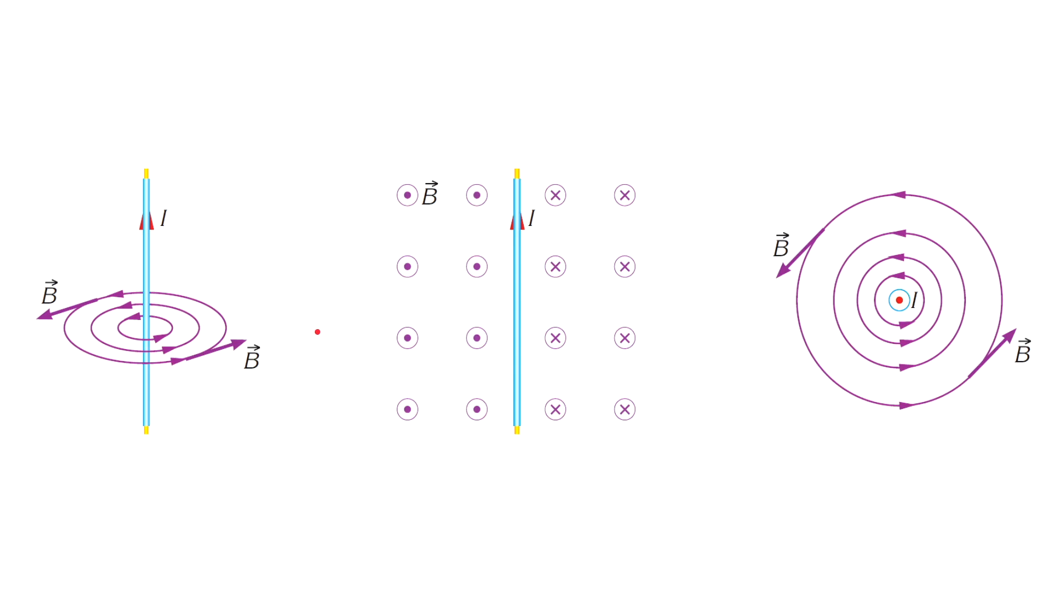The magnetic field lines are directed perpendicular to the plane of the current. Therefore, the directions perpendicular to the page are indicated by symbols. The direction into the page is represented by this symbol, and the direction out of the page is represented by this symbol.